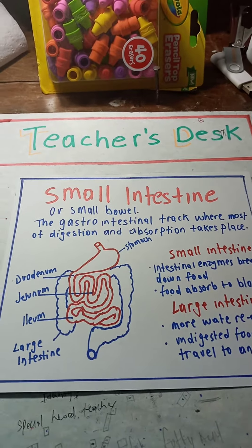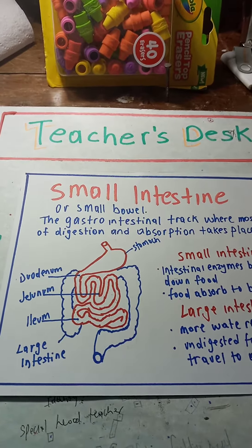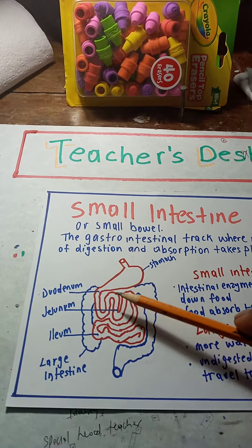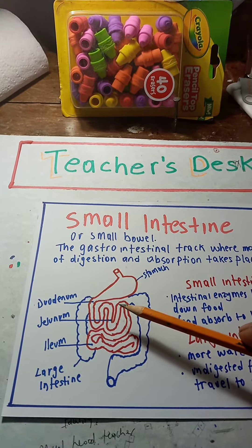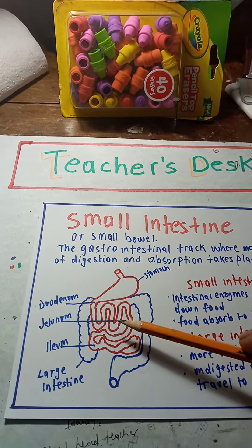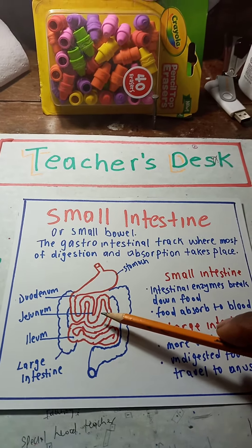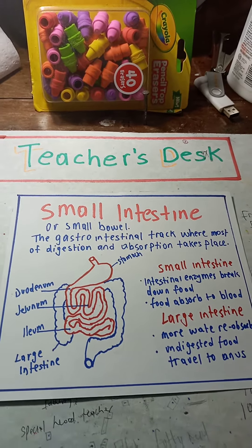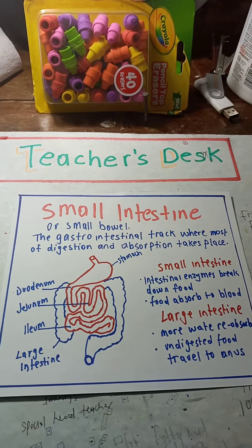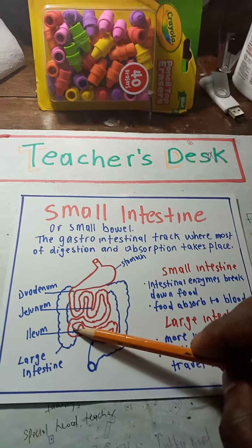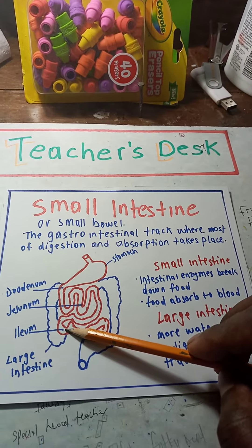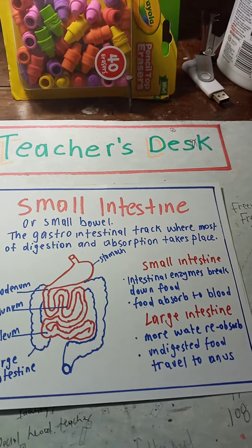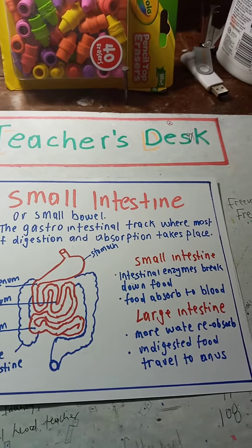The ileum is where absorption takes place. After digestion takes place in your small intestines, fat is converted to fatty acids and glycerol, carbohydrates fully break down to glucose, and protein breaks down to amino acids. This is where it all absorbs into your blood, and the blood is going to take it all over the body.